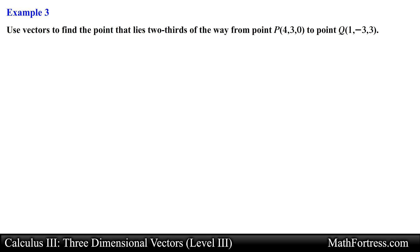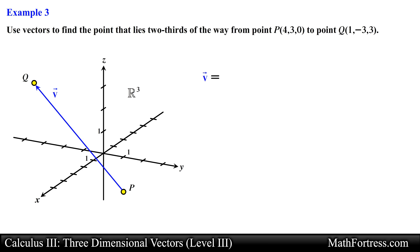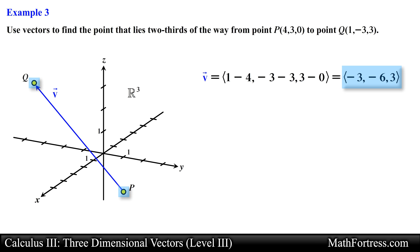Use vectors to find the point that lies two-thirds of the way from point P to point Q. Let's go ahead and plot these points to get a graph we can work with. We are asked to determine the coordinate point that is two-thirds of the way from point P to point Q. We can determine this by first finding the component form of the vector represented by points P and Q — subtracting the initial point from the terminal point — obtaining negative 3, negative 6, and 3 for the components.